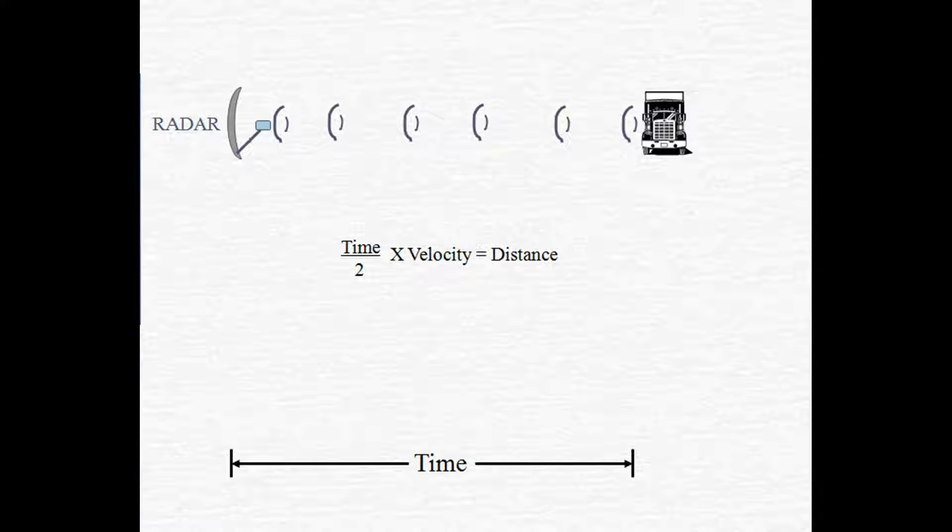The following formula is then used to calculate the distance. First, you cut the time in half. This is because that time represented traveling both directions. We only want one direction. Then you multiply that time by the velocity, or how fast that radio wave was moving. In this case, it's moving at the speed of light. You now know how far away that object is.